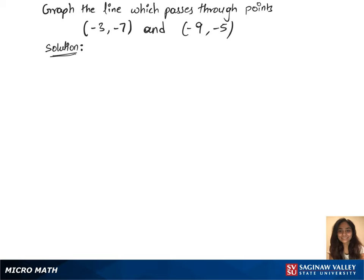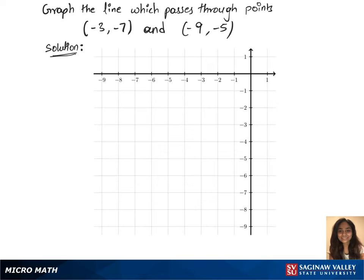To graph the line which passes through these points, we need a graph first. We see all those points are negative, and it lies in the third quadrant.